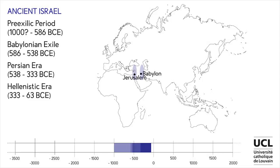Domain 8: Ancient Israel. The important historical periods include the pre-exilic period, the Babylonian exile, the Persian era and the Hellenistic era. The important sites include Jerusalem and Babylon. Ancient Israel was a civilization of the ancient Near East located in Canaan's land, known above all through the Hebrew Bible but also from Egyptian and Mesopotamian sources. Its history is divided in two by the Babylonian exile, which put an end to the Judean kingdom — marking the beginning of the diaspora in Babylonia and Egypt, and also the origin of Judaism.